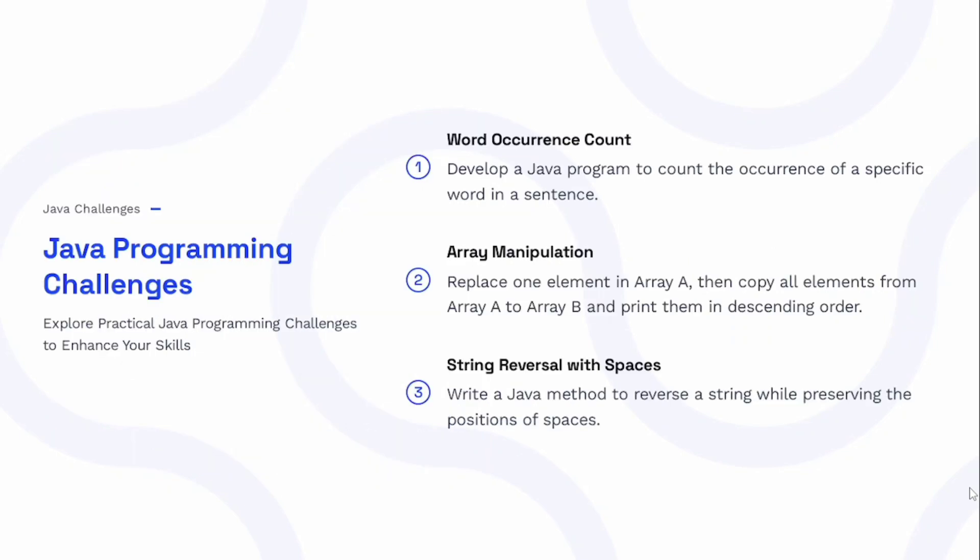Let us see the first set of questions — Java programming challenges. For these challenges, I haven't included the answers. If you require the answers, please comment in the comment section and I will include them in upcoming videos. The first challenge is word occurrence count: develop a Java program to count the occurrence of a specific word in a sentence. Next is array manipulation: replace one element in array A, copy all elements from array A to array B, and print them in descending order. Third is string reversal with spaces: write a Java method to reverse a string while preserving the position of spaces.